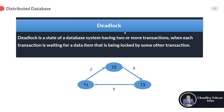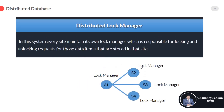The next topic is deadlock, which is a very interesting topic. A deadlock is a state of a database system in which two or more transactions are each waiting for a data atom that is being blocked by another transaction. As we know, every transaction has the right to lock data atoms at other sites.